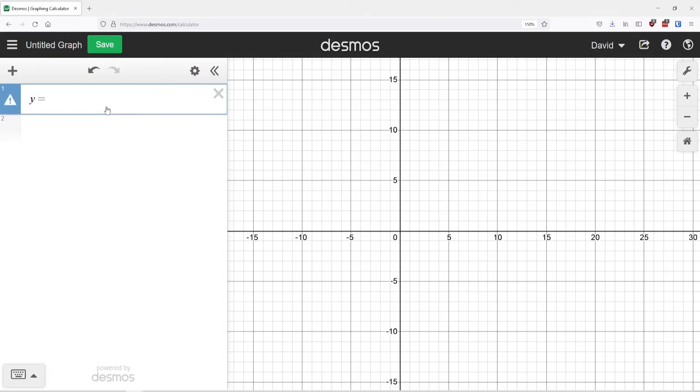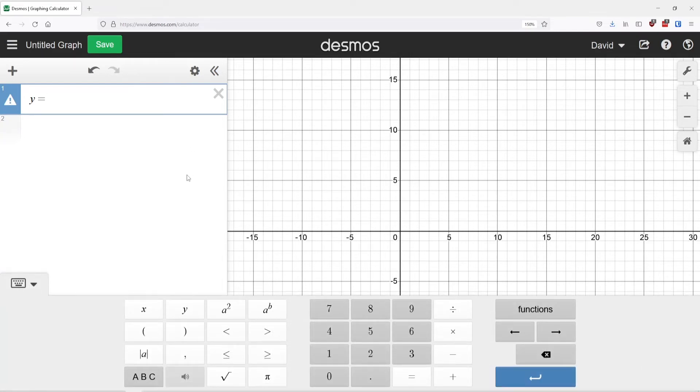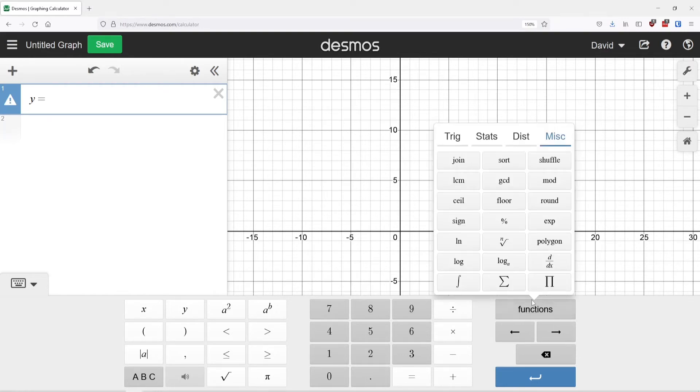For anything else you might want to type in, your best bet is to come down to the keypad. It's a formula keyboard where all the basic number functions and symbols you can type on the keyboard are visible. There's the square root button, pi, absolute value, and all other functions are in the functions menu.